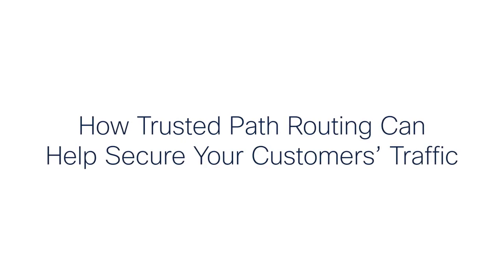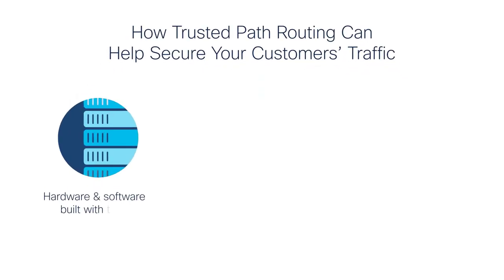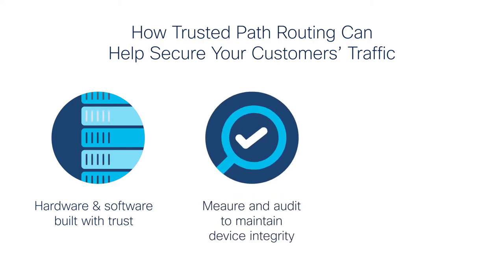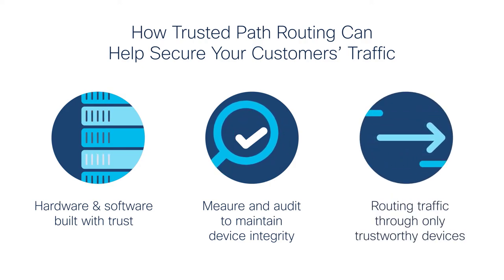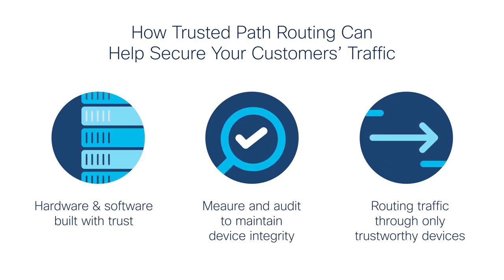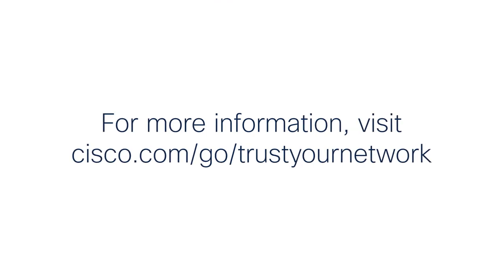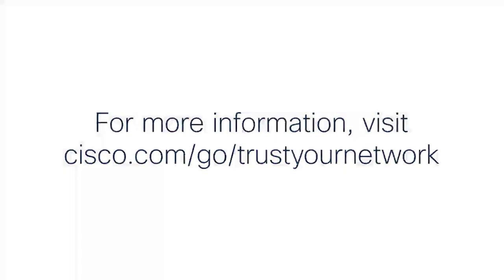This demonstration showed how trusted path routing can help secure your customers' traffic. You must start with hardware and software that is built with trust. Software then helps measure and audit to maintain device integrity, and customers benefit by routing their traffic only through trustworthy devices. This solution secures critical data flows across the service provider infrastructure. Thank you for joining us for this demonstration of Cisco's trusted routing solution. For more information, please visit cisco.com/go/trustyournetwork.